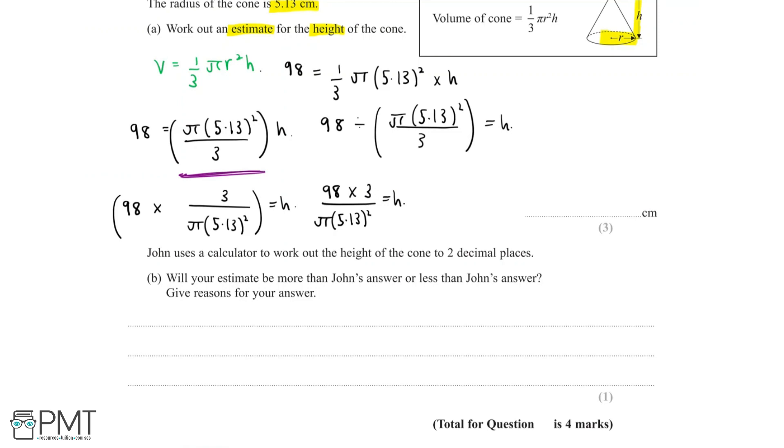Now we need to estimate. To estimate, let's round what we have to one significant figure. 98 to one significant figure is the same as saying 100. And then 5.13 to one significant figure is the same as 5. So we're left with 5 squared. Let's bring our work in over here.